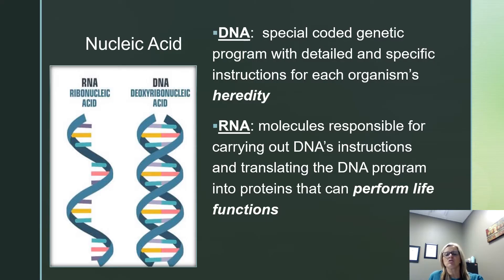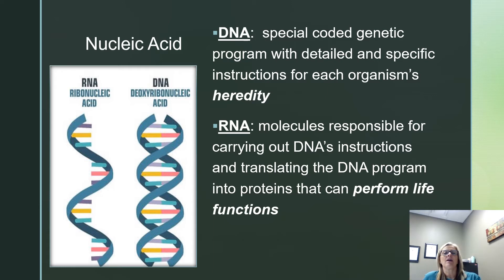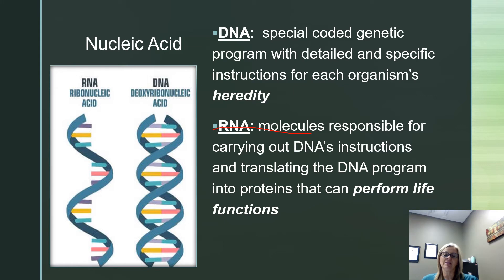Nucleic acids are the fourth group. We talked about the first three a lot in anatomy. We're going to spend more time with nucleic acids here because this is important for things like viruses that need to be copied. DNA and RNA are two really important representatives of this fourth type of macromolecule. We need DNA for hereditary purposes — that's how we pass on detailed instructions. RNA is responsible for carrying out those instructions, translating that programming language into proteins that can perform life functions.